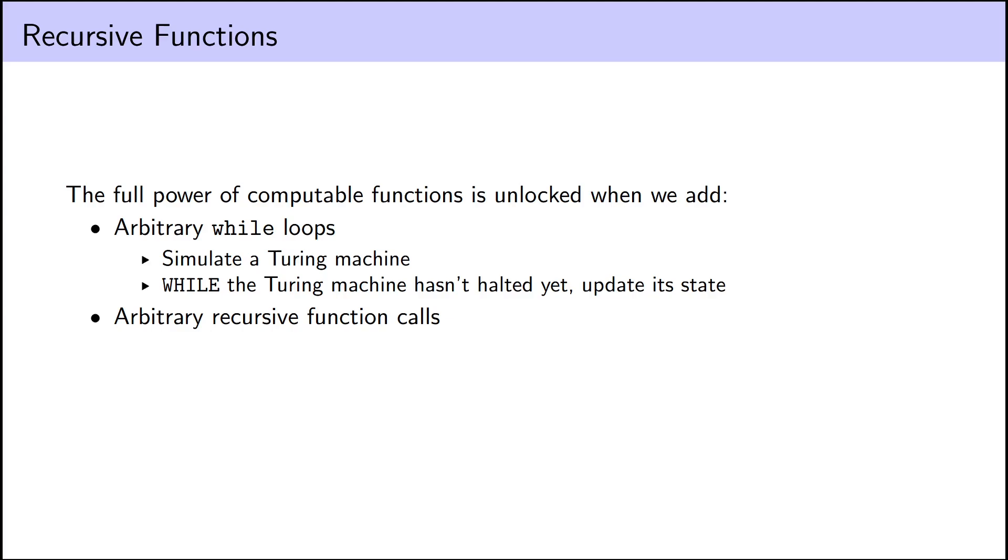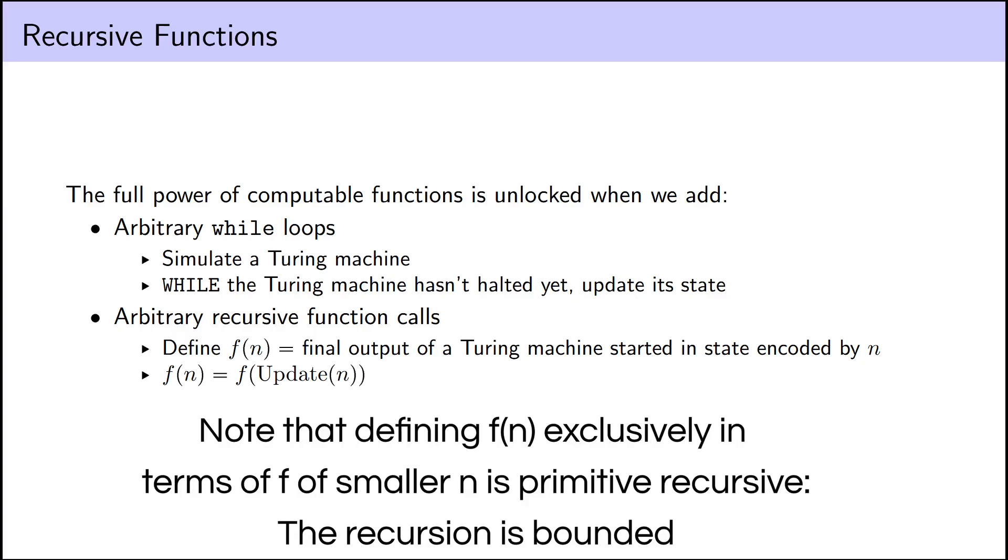That would also allow us to do arbitrary computations. We can construct a function f of n that interprets n as a complete encoding of the current state of a Turing machine, and outputs the final output of that Turing machine once it's finished running. The main recursion we need is that f of the number encoding one state of a Turing machine should be equal to f of a number encoding the next state. But this could mean that we're defining f of n in terms of f of potentially larger values. When our Turing machine doesn't halt, this corresponds to defining f of n in terms of itself, or possibly an infinite chain of values.